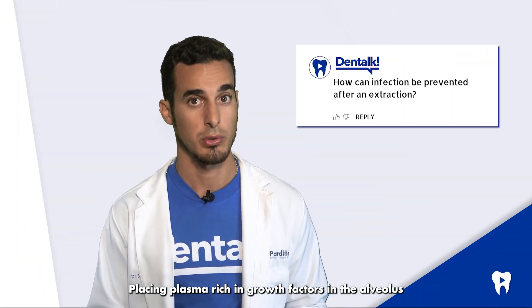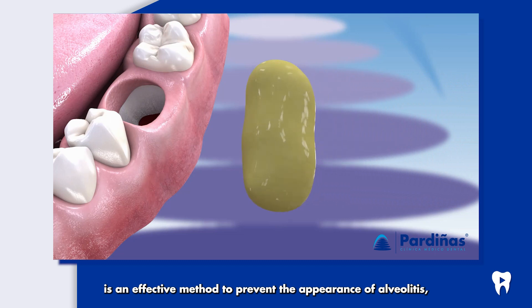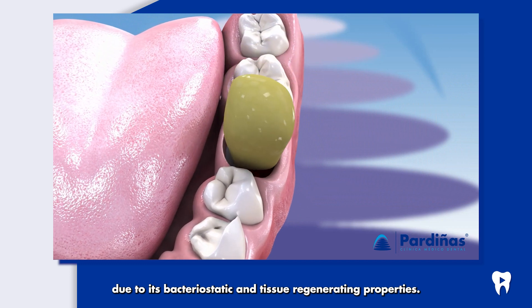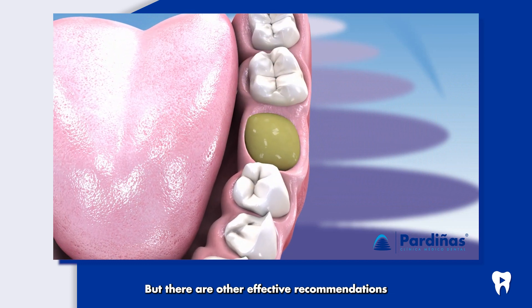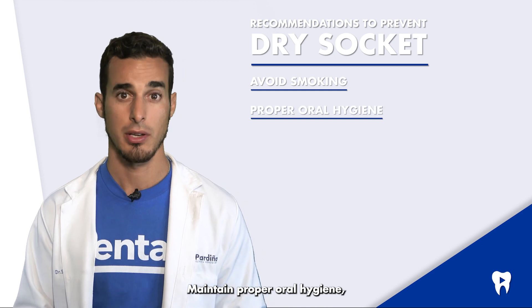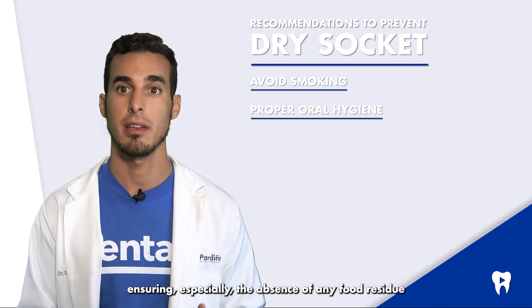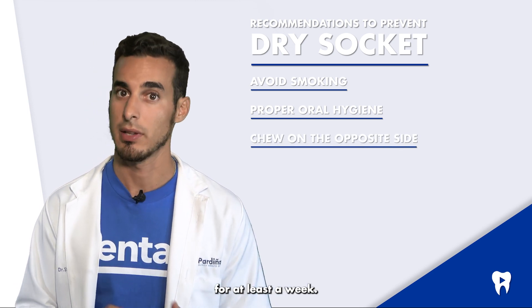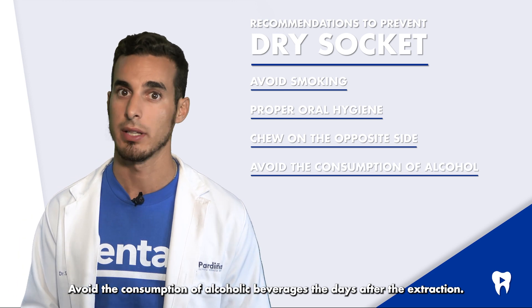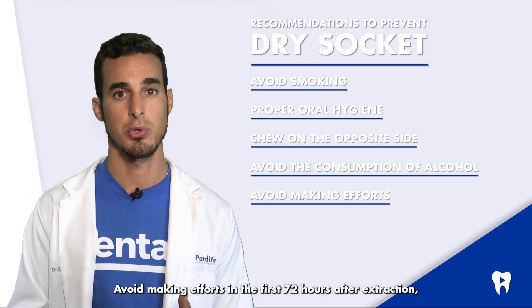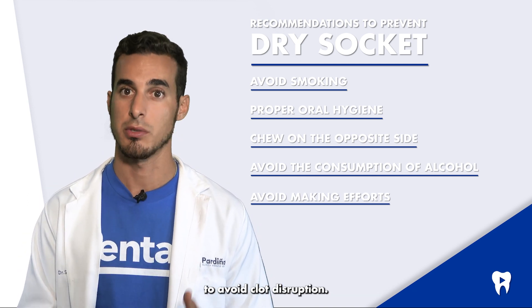Placing plasma-rich growth factors in the alveolus is an effective method to prevent the appearance of alveolitis, due to its bacteriostatic and tissue-regenerating properties. Other effective recommendations include: avoid smoking the days after extraction; maintain proper oral hygiene, ensuring the absence of any food debris in the intervened area; chew on the opposite side for at least a week; avoid alcoholic beverages; and avoid strenuous efforts in the first 72 hours after extraction to prevent clot disruption.